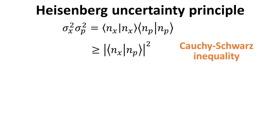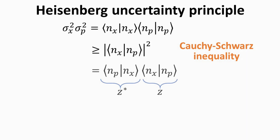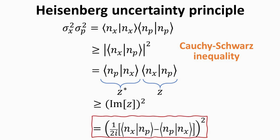Making use of the Cauchy-Schwarz inequality then requires the product of the two inner products to be larger than the modulus square of the inner product of n_x with n_p. Denoting the inner product of n_x with n_p as z, we can further establish a less restrictive bound by noting that the magnitude of the complex number z must always be larger than the square of its imaginary part. Writing the imaginary part of z in terms of the inner product of n_x with n_p allows us to arrive at the key result of the Heisenberg-Robertson uncertainty principle.